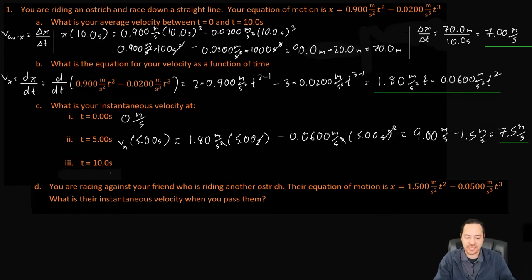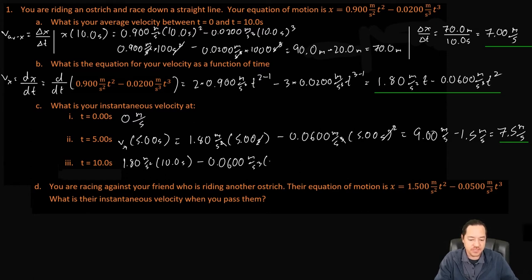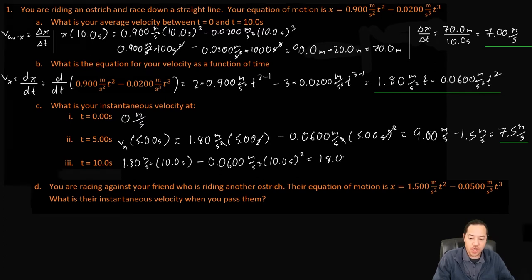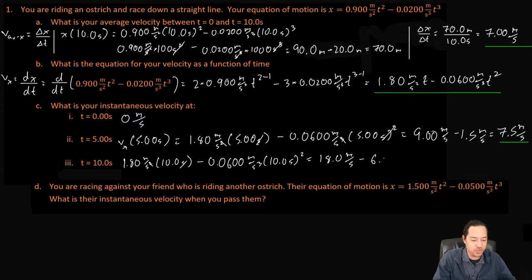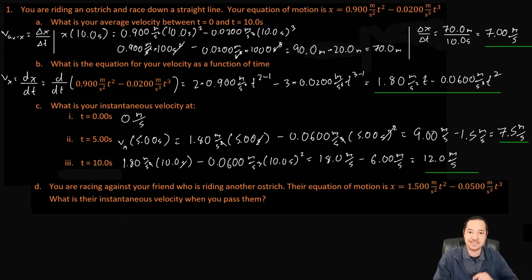For t equals 10 seconds: 1.80 meters per second squared times 10.0 seconds minus 0.0600 meters per second cubed times 10.0 seconds squared. That gives 18.0 meters per second minus 100 times 0.06, which is 6.00 meters per second. So our final answer is 12.0 meters per second — that is our instantaneous velocity at t equals 10.